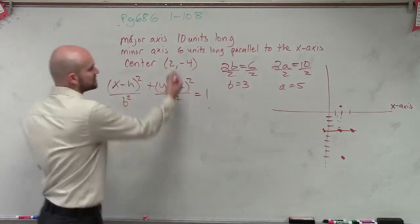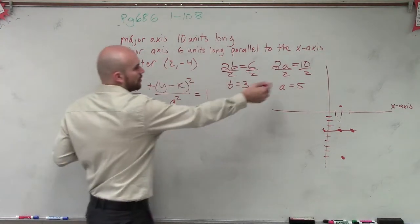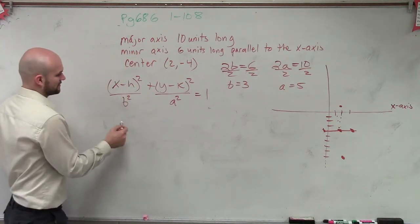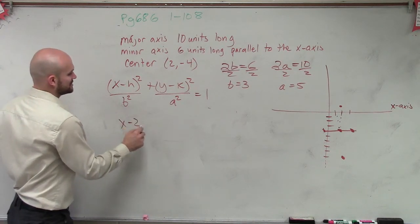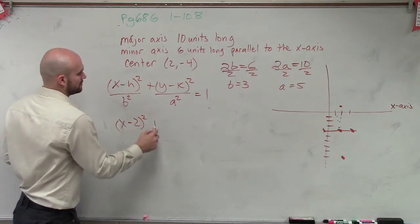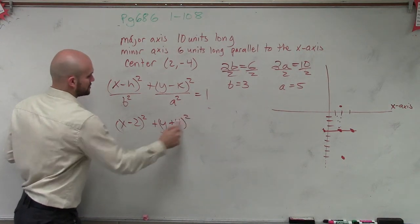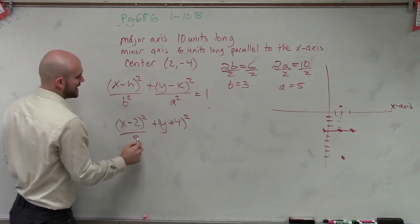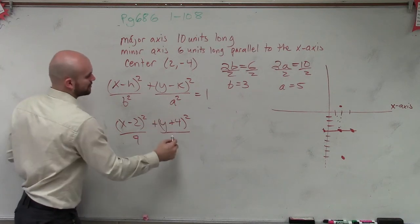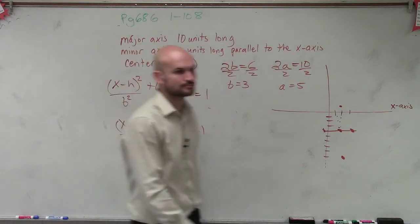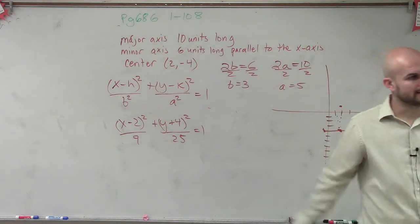Now we know what the center is, which is 2 comma negative 4. And we know our a and our b. So we'll plug them in. So x minus 2 squared plus y plus 4 squared over b squared, which is 9, over a squared, which is 25, equals 1. And there you go.